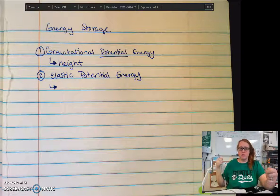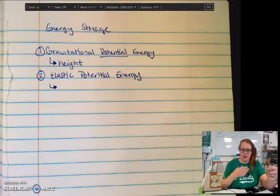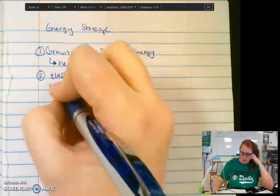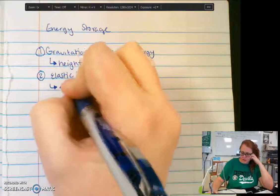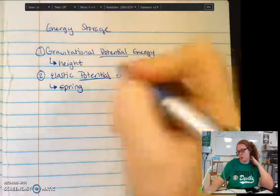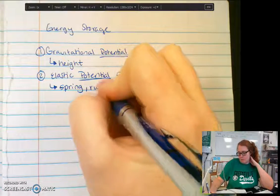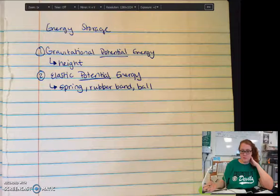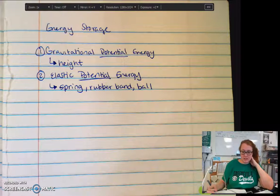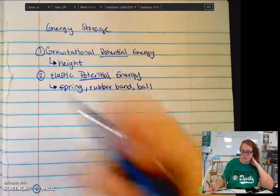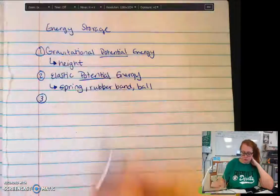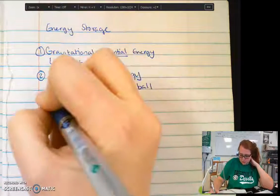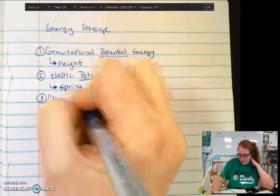Now that band has stored energy to be able to give the object motion. So this is another potential energy, energy being stored in a spring or a rubber band, a ball that would maybe bounce, any of those things that have the ability to be stretched or compressed.